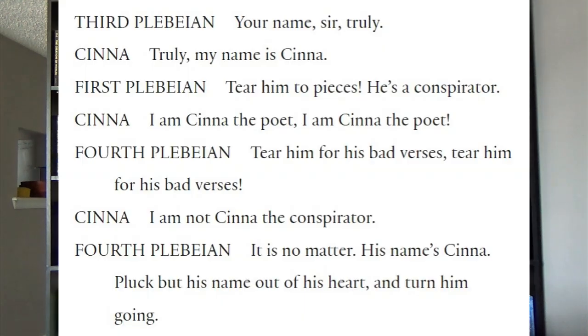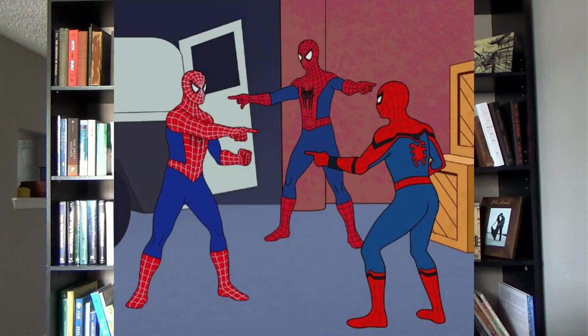Freud gives a nice example from a poem — from Julius Caesar — where a character named Cinna is mistaken for the conspirator Cinna just because of his name: 'Tear him to pieces! He's a conspirator! I am Cinna the poet! Tear him for his bad verses! It is no matter, his name's Cinna — pluck but his name out of his heart and turn him going.' In other words, even if you have no hostile feelings toward this particular Cinna, you have hostile feelings toward the other Cinna — they're associated, so you take out your aggression on the person right in front of you.